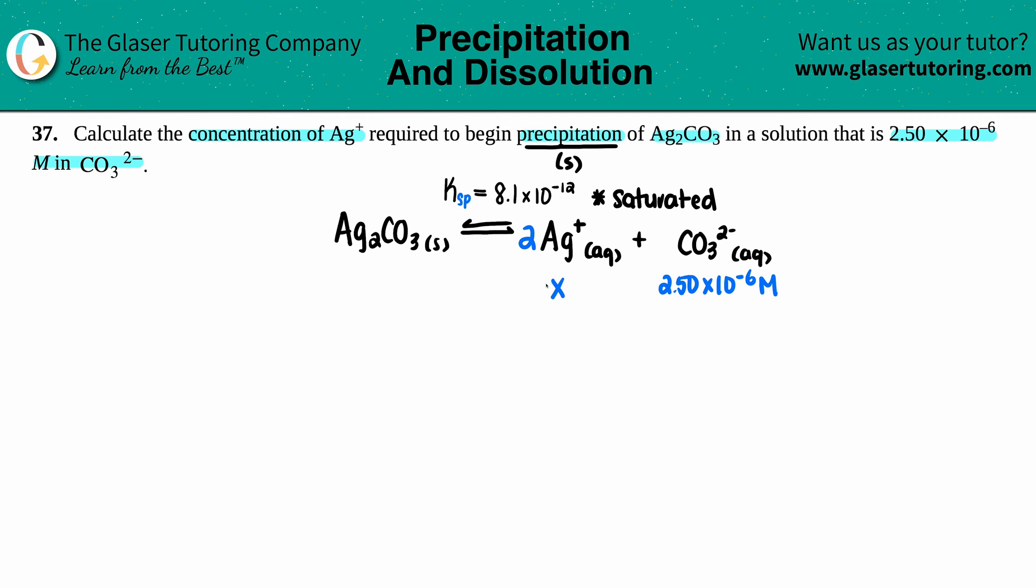Let's get the KSP equation. General formula is products raised to the coefficients. KSP equals concentration of Ag+ times the concentration of CO₃²⁻. I have the 2 in front of the Ag, so I have to take the Ag concentration and square it. Ag+ we're labeling as x, carbonate is 2.50×10⁻⁶, and the KSP is 8.1×10⁻¹².